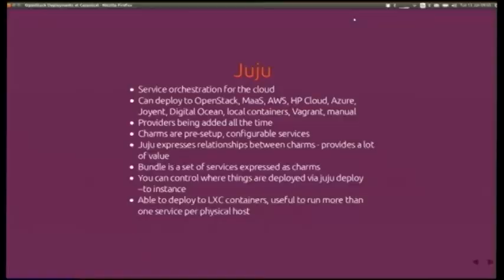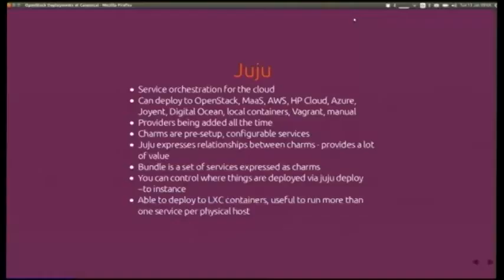And then you use Mojo to validate it. Juju is service orchestration for the cloud. It supports OpenStack, MAS, AWS, HP Cloud, Azure, Joyent, DigitalOcean, an ARM online labs provider, Vagrant, local containers, and manual. Google Cloud is not supported just yet, but providers are being added all the time.